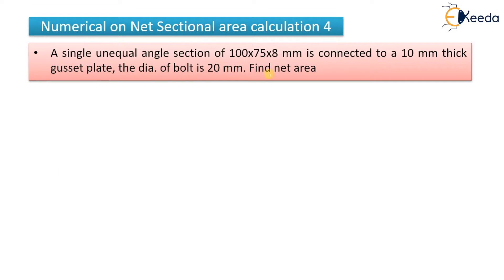The problem statement says a single unequal angle section of 100 by 75 by 8 mm is connected to 10 mm thick gusset plate, the diameter of bolt is 20 mm, you have to find out the net area.